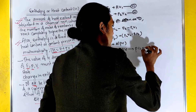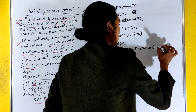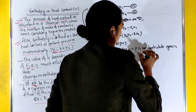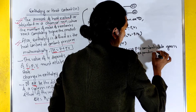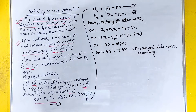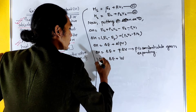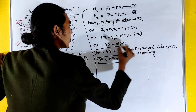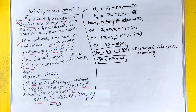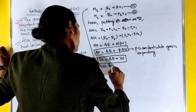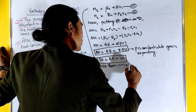P is constant while the gas is expanding. This gives us delta E plus P delta V, which we derive using the first law of thermodynamics.